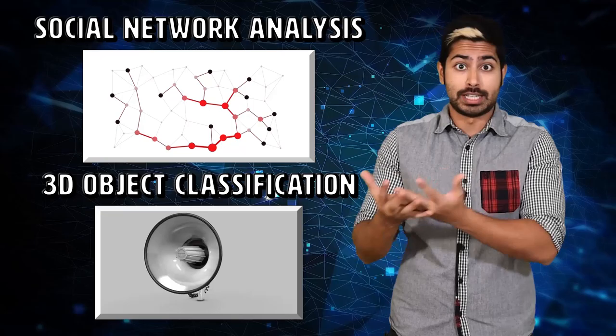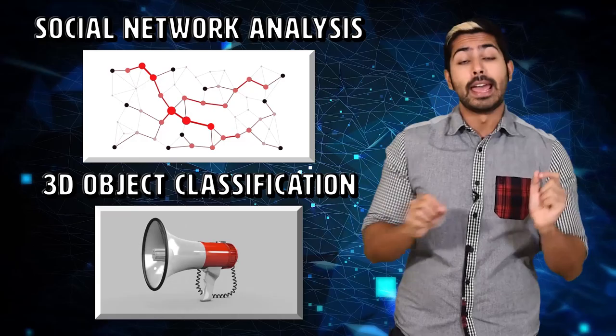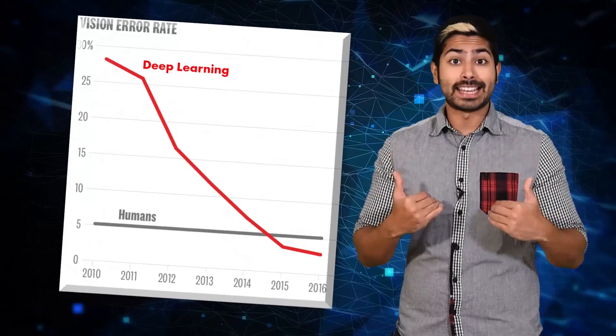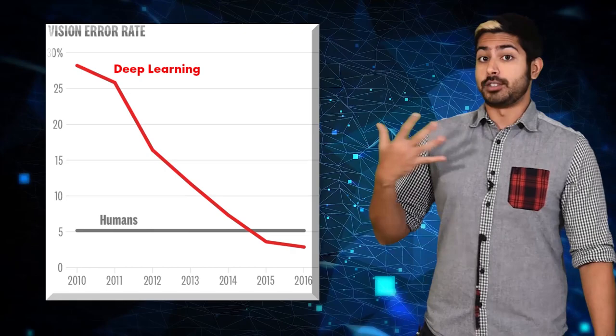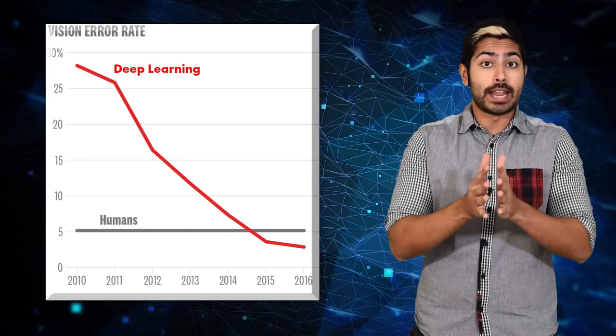In this tutorial video, we'll learn how to use geometric deep learning to classify groups with similar interests in a social network and apply it to 3D object classification as well. In the last decade, deep learning algorithms like convolutional neural networks and recurrent neural networks have allowed us to achieve unprecedented performance on a broad range of problems.